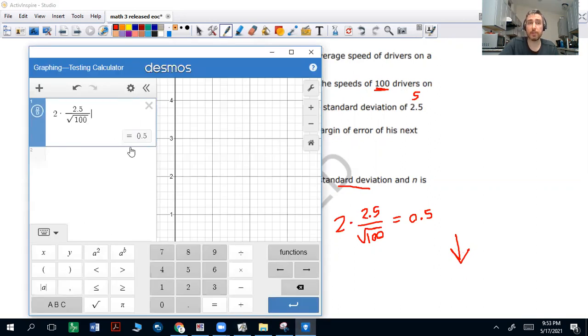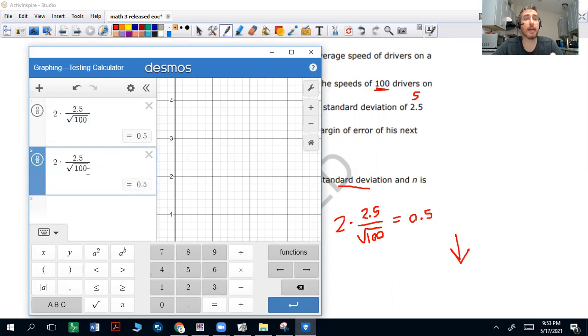So what happens if I take this margin of error and I put a bigger number? Notice that that value went down. If I made that a smaller number, say I made it 10, it's a lot higher.